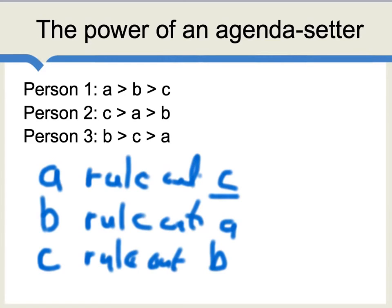One final point: if there's some option which everyone really hates — say everyone hates option D — then even the power of an agenda-setter will not manage to get option D enacted into policy. In this sense, there are limits on the power of agenda-setting. It cannot put into democratic force a choice, candidate, or policy which really no one wants very much at all.